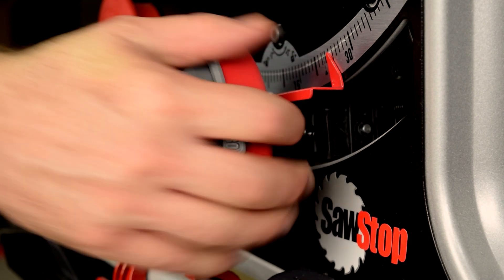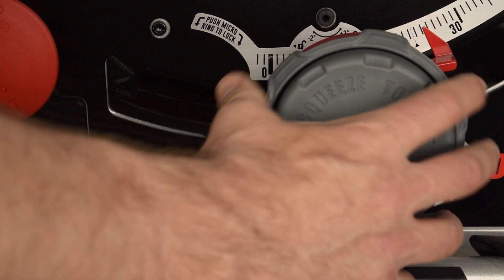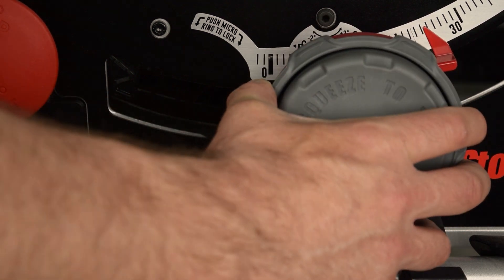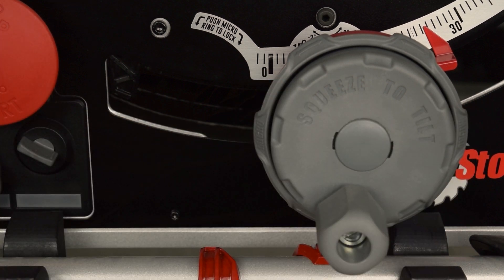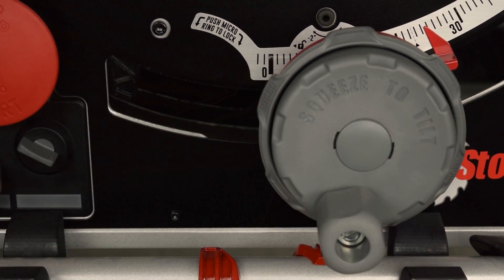Use the micro bevel control to precisely adjust the angle you would like to cut. To adjust the micro bevel, turn the control wheel. When satisfied, push in the control wheel to lock the bevel angle. Unlock the control wheel and fine tune as needed. Lock the wheel once again.